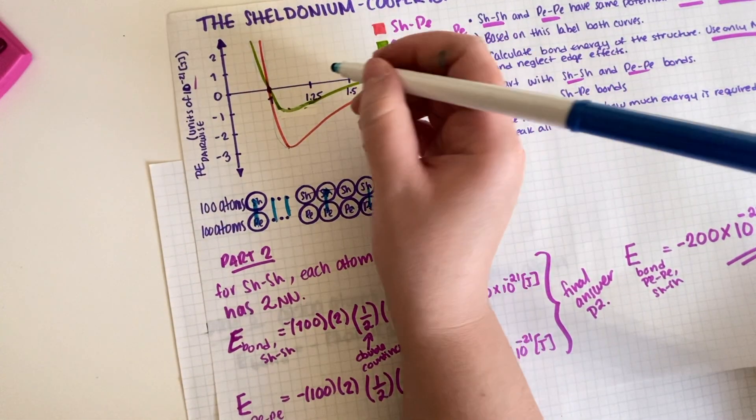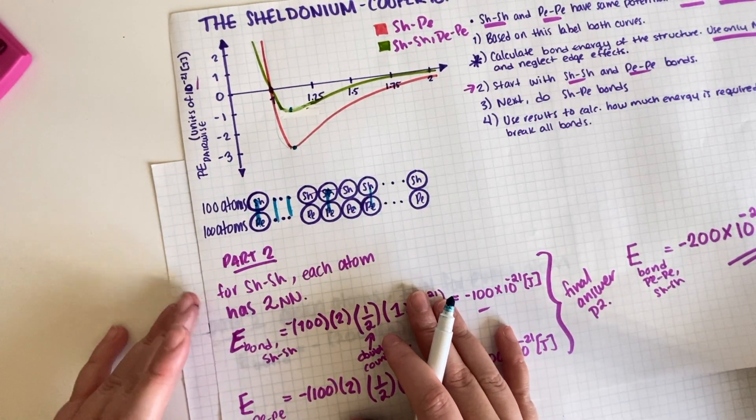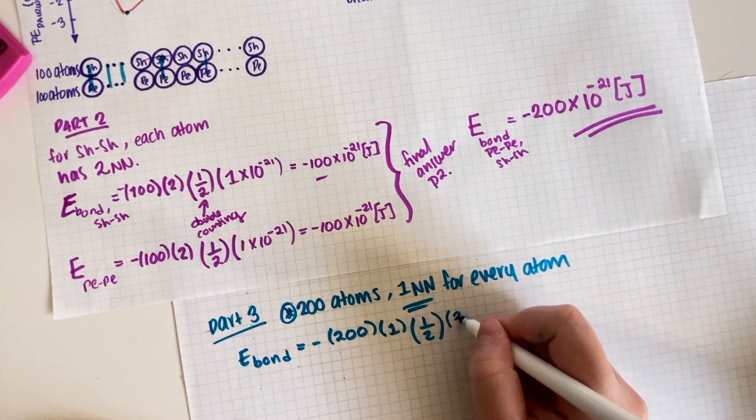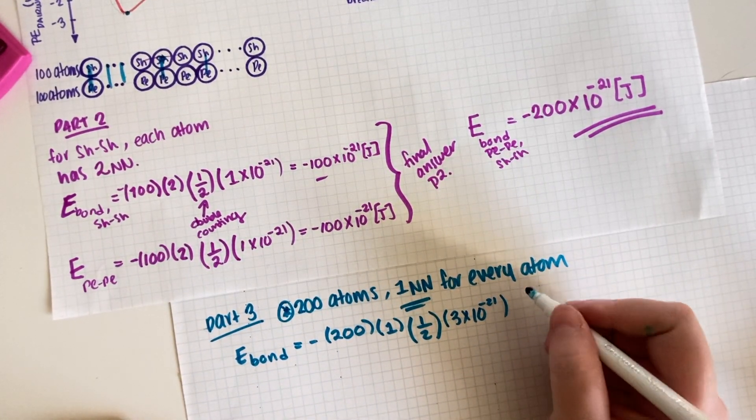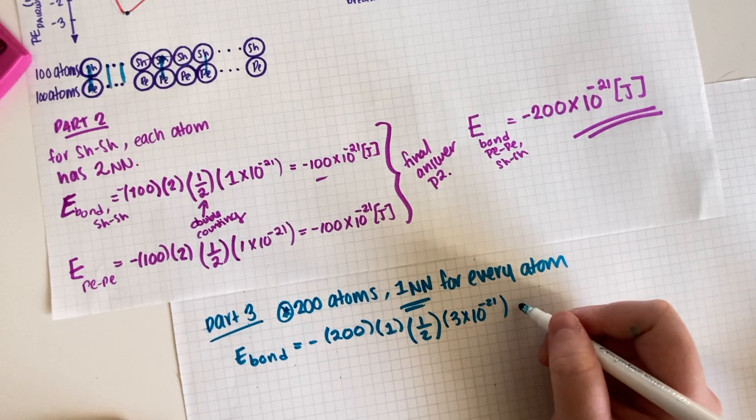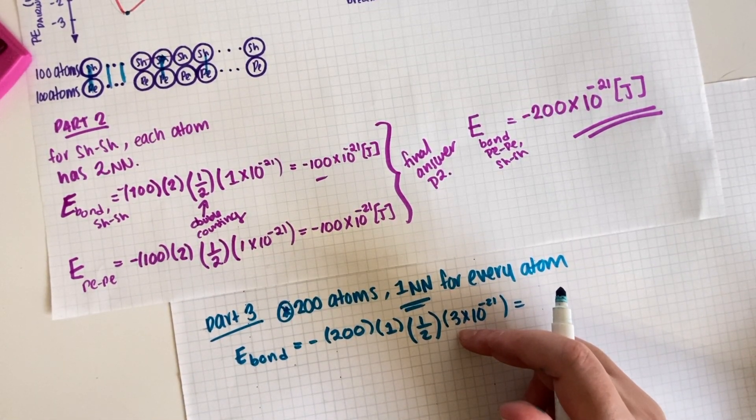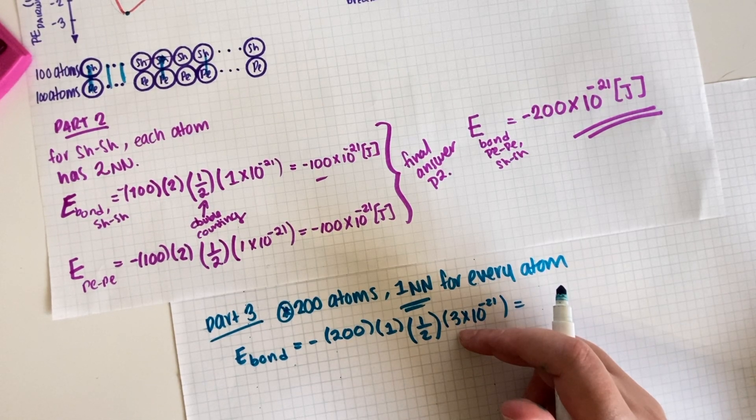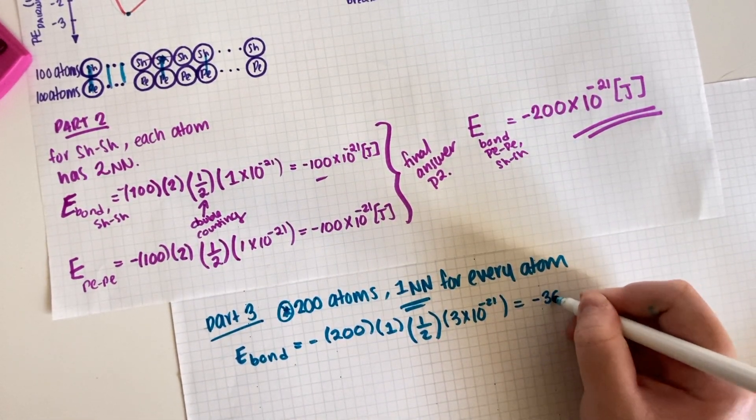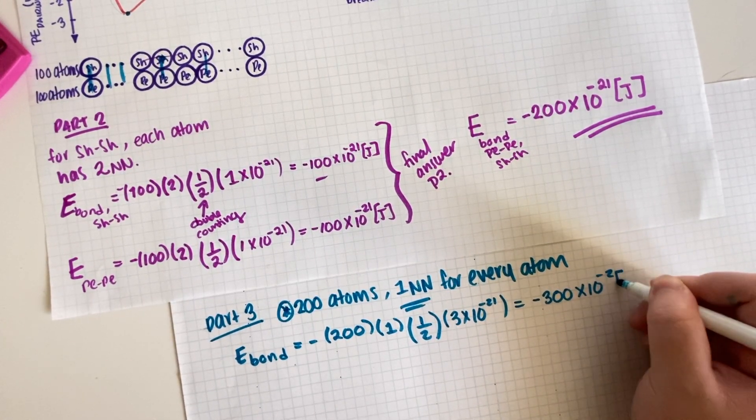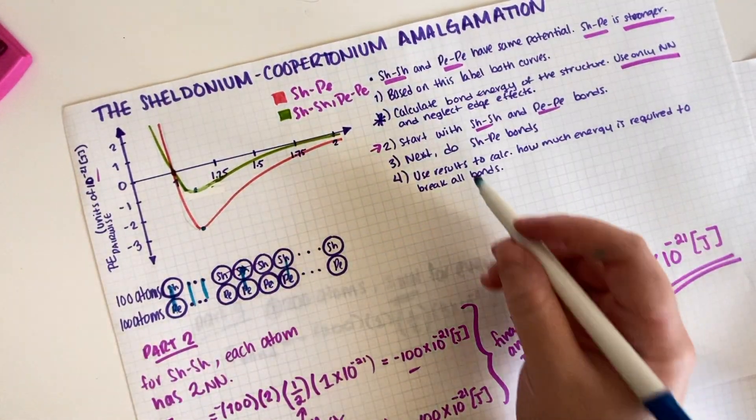And then we have to multiply times the well potential value. In this case we are doing Sheldonium-Coopertoniums, so whereas before I was looking at this point in the graph, now I have to look at this point in the graph, which is negative three times 10 to the negative 21. Already did the negative over here, so now we multiply. So this is 100, so this is negative 300 times 10 to the negative 21 joules, final answer.